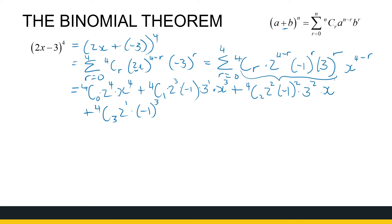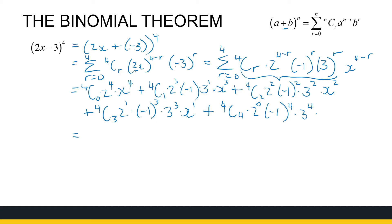Continuing: the fourth term has x^2 — don't forget the x. Then 4C3 · 2^1 · (-1)^3 · 3 · x^1. The last term (r=4): 4C4 · 2^0 · (-1)^4 · 3^4 · x^0. Note that 2^0 is 1, (-1)^4 gives plus 1, and x^0 is 1, so we don't need to write those.